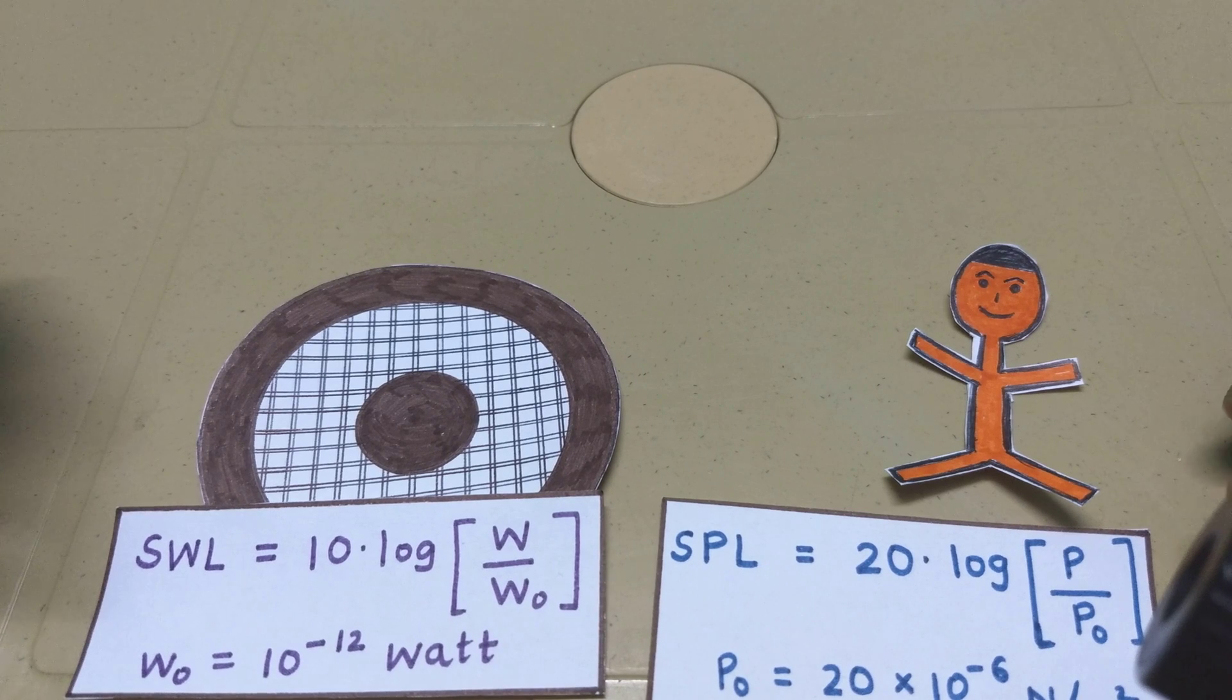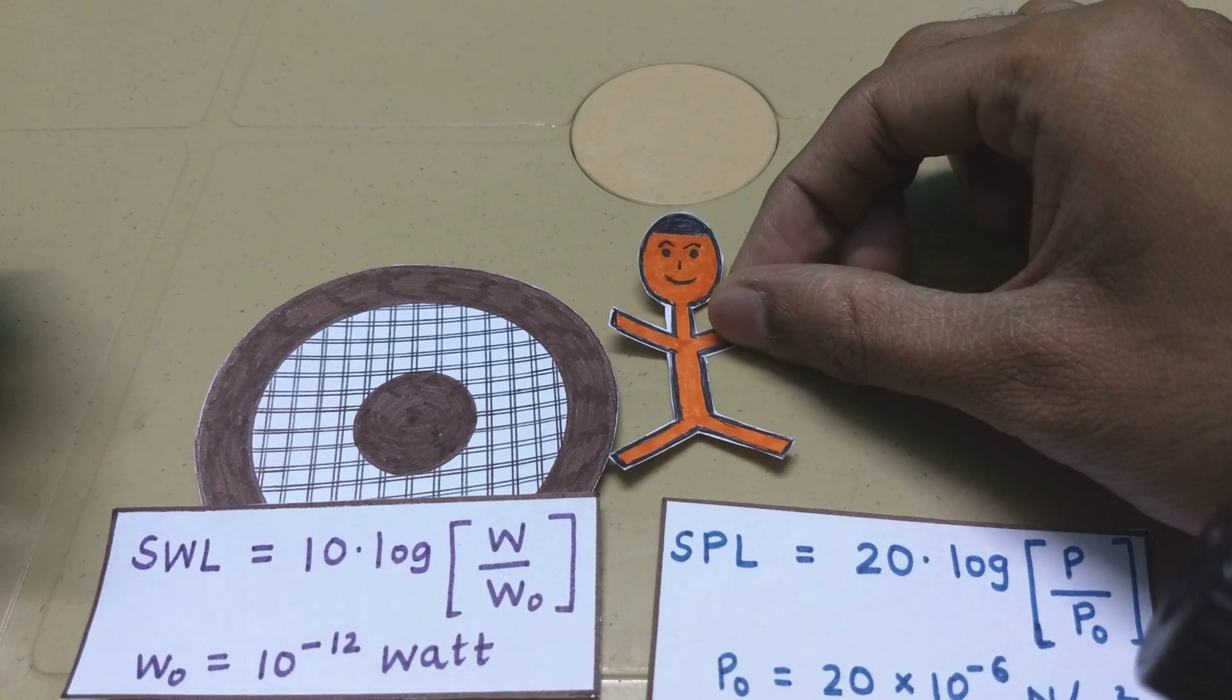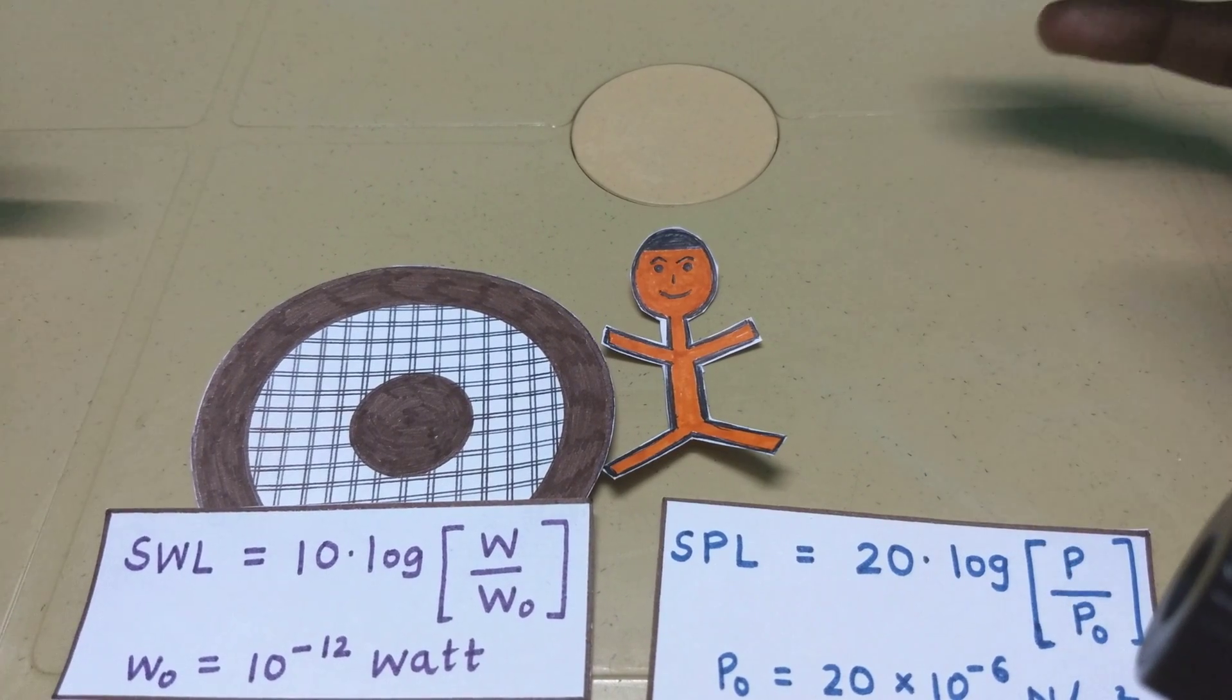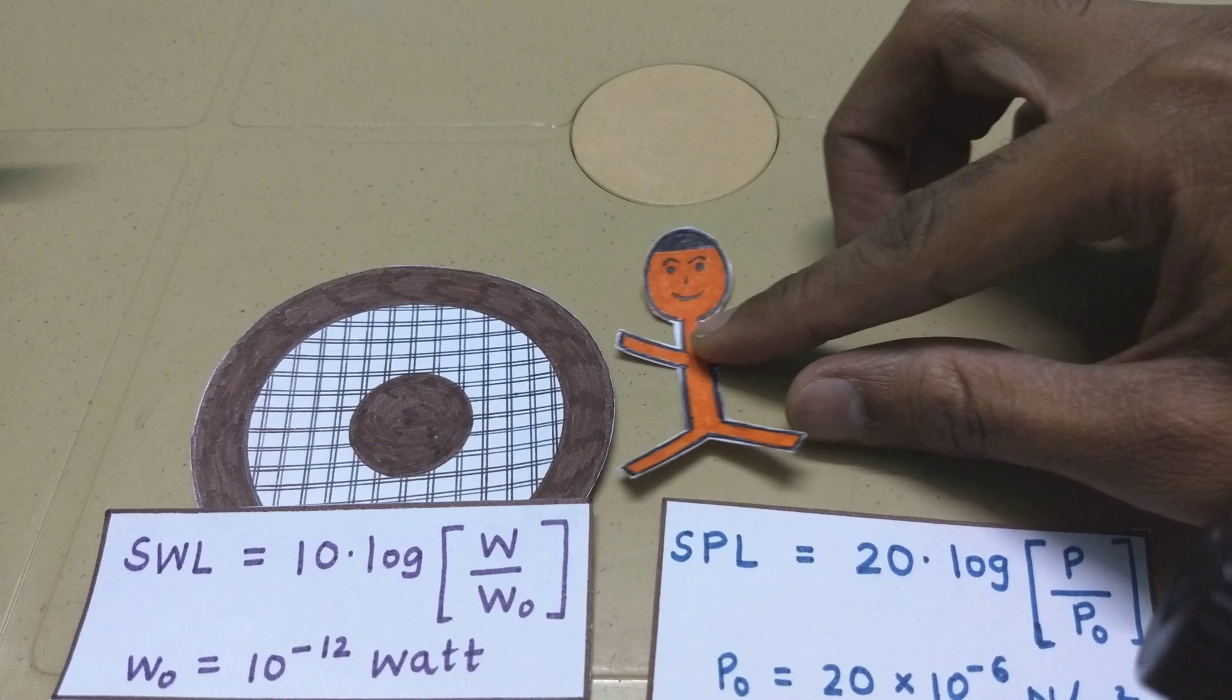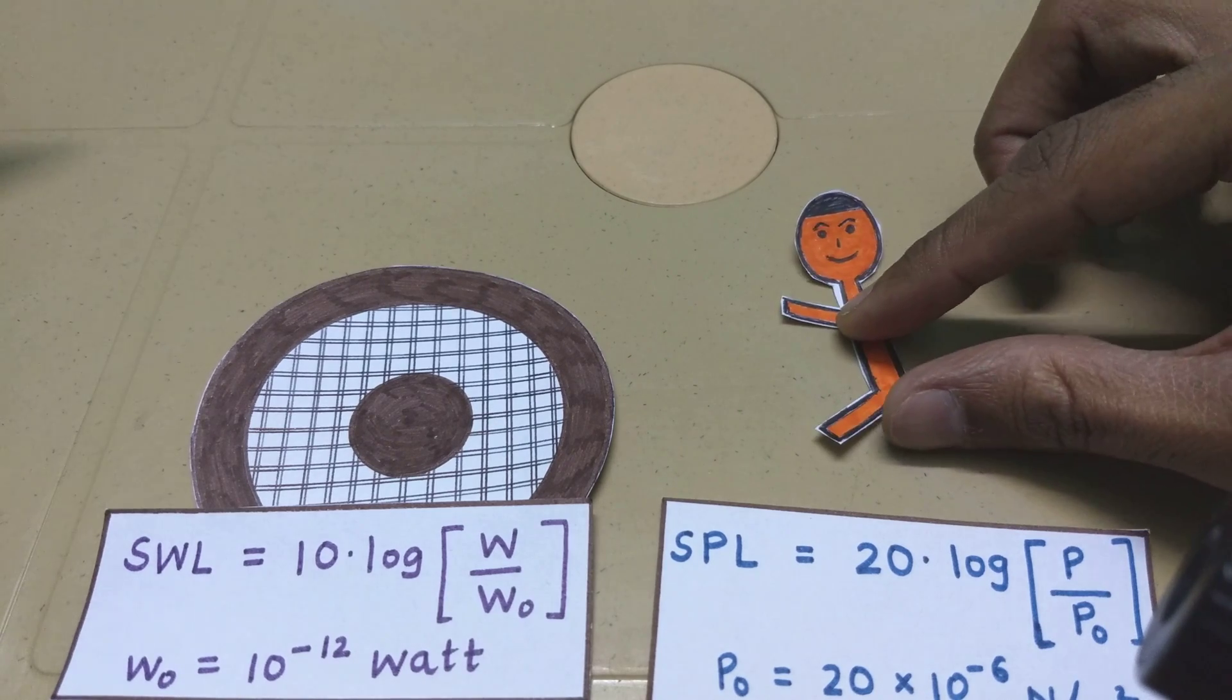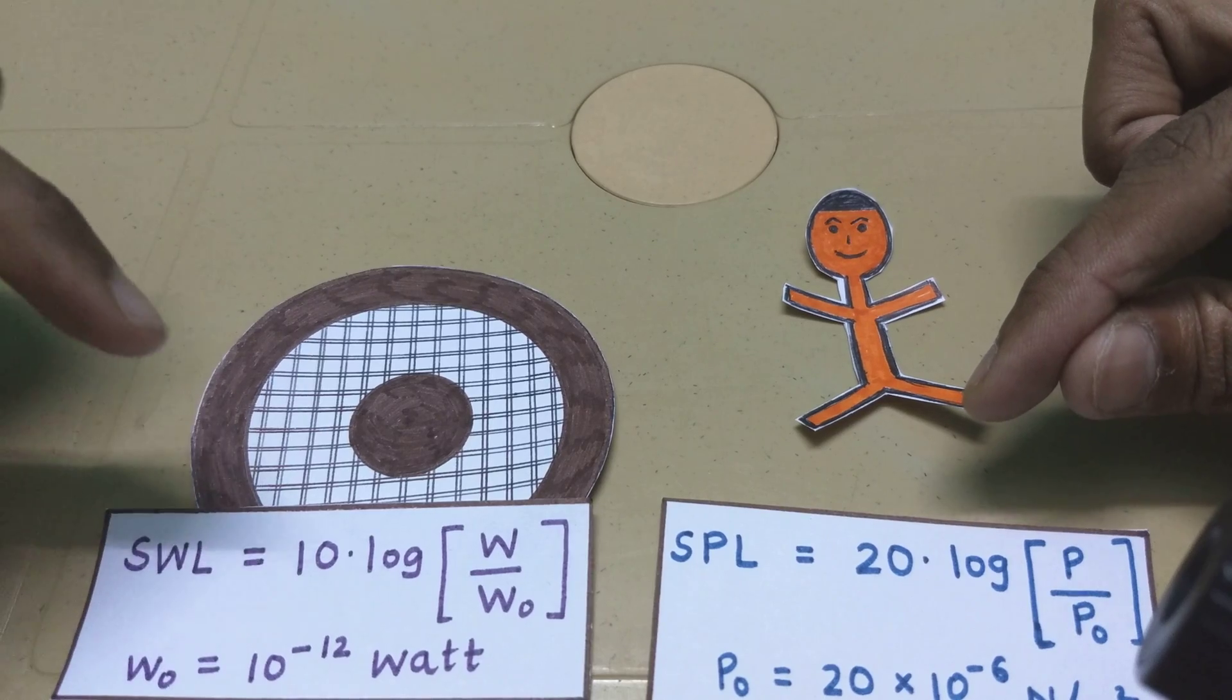Here's an interesting case. Let's say Bob moves very close to the speaker. Bob may perceive loud noise. And let's say Bob moves farther away from the speaker. Bob may perceive subjectively less noise. Now what's happening here is the change in sound pressure level and not the sound power level.